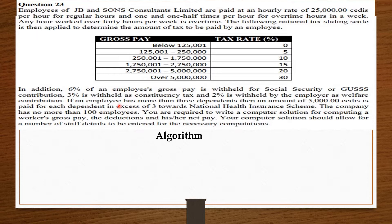If an employee has more than three dependents, an amount of 5,000 cities is paid for each dependent in excess of three towards the National Health Insurance Scheme. The company has no more than 100 employees. You are required to write a computer solution for computing a worker's gross pay, the deductions, and net pay, allowing for multiple staff details to be entered.